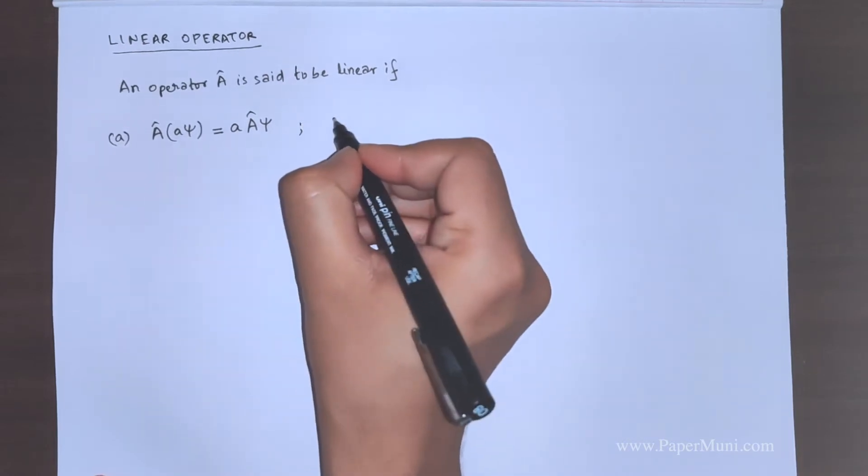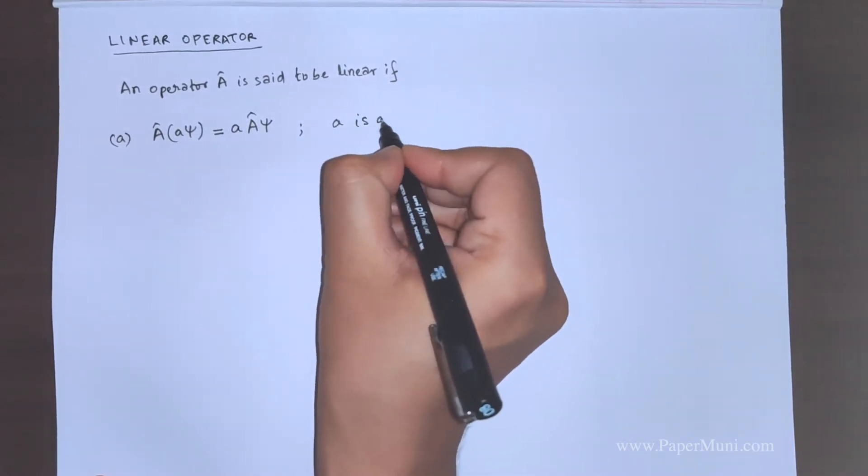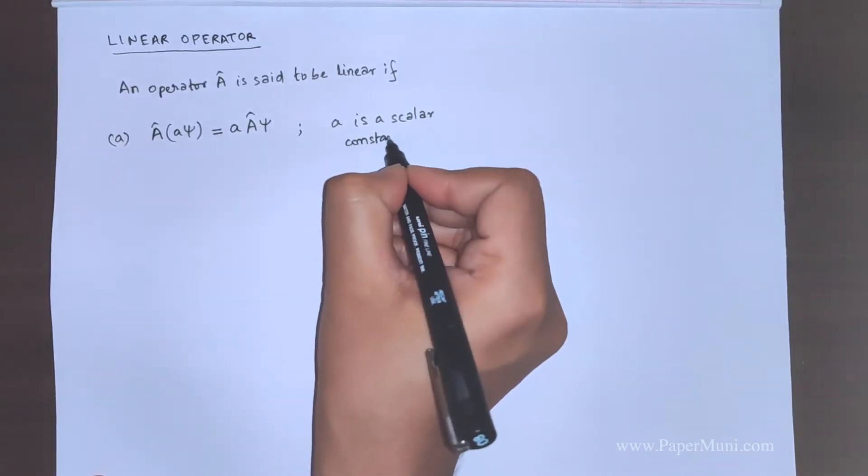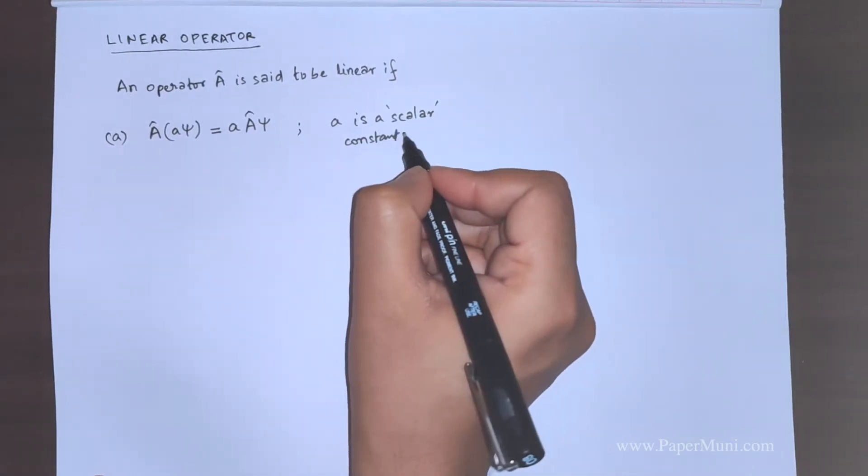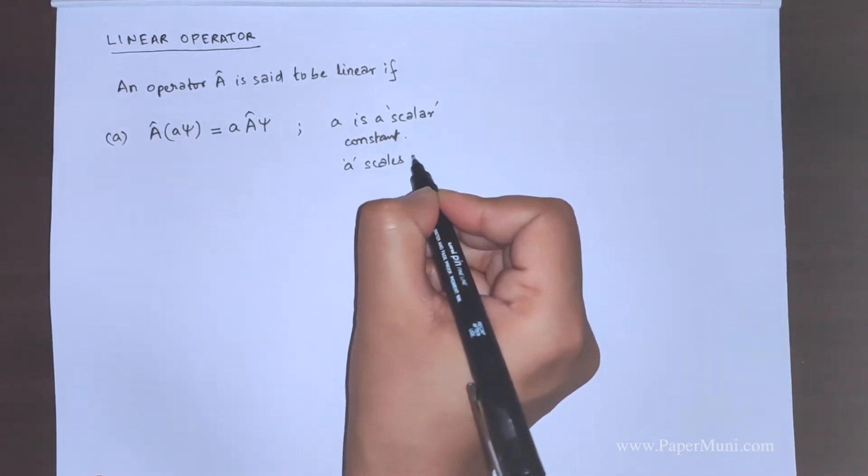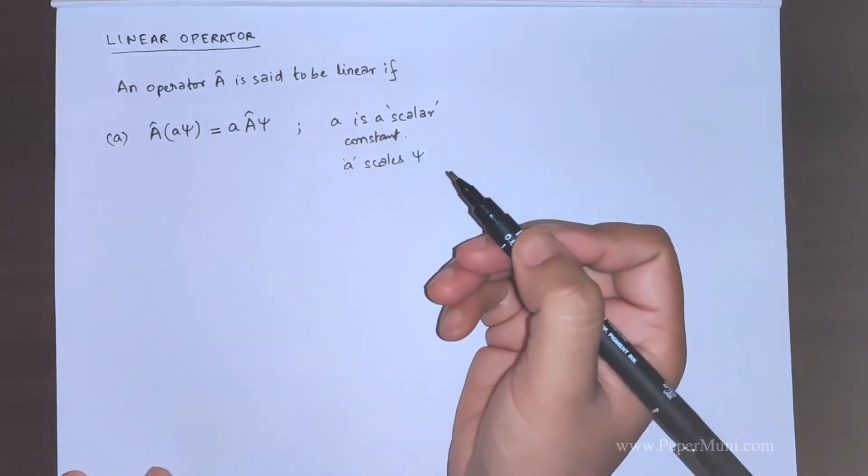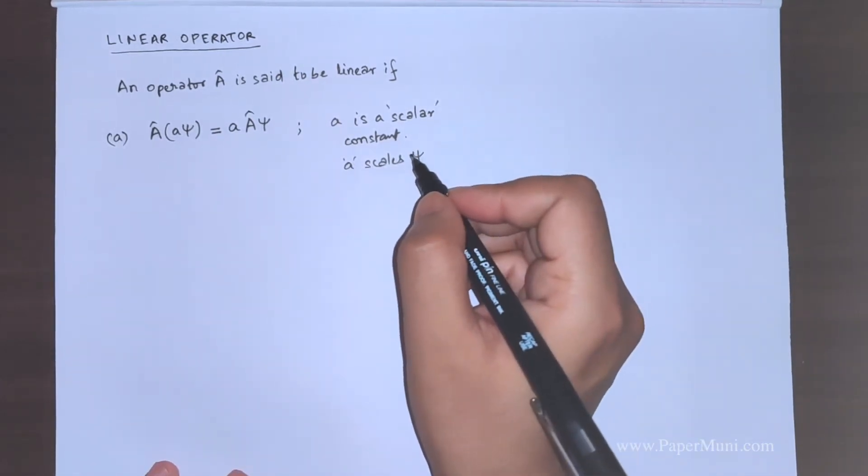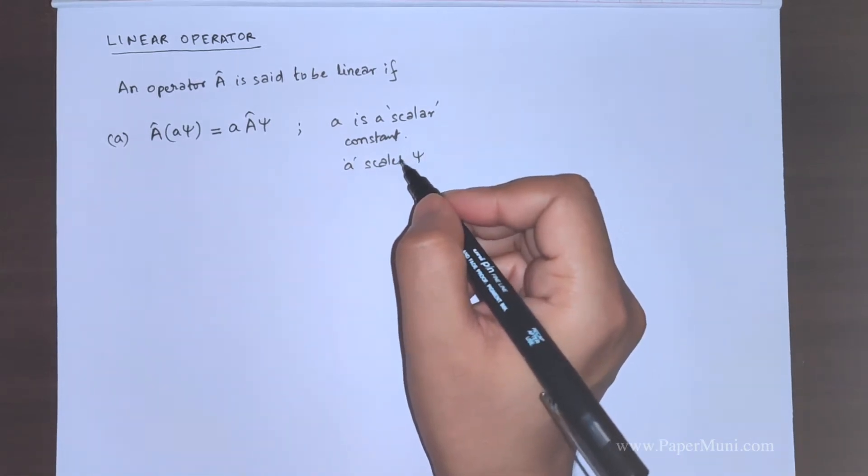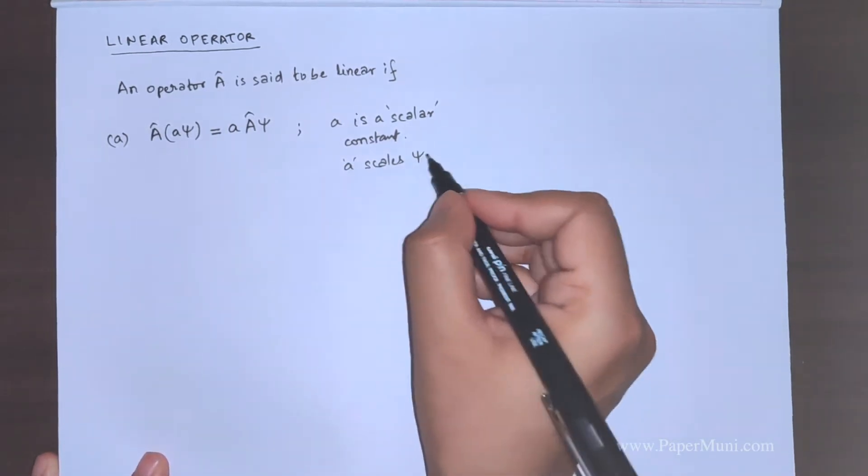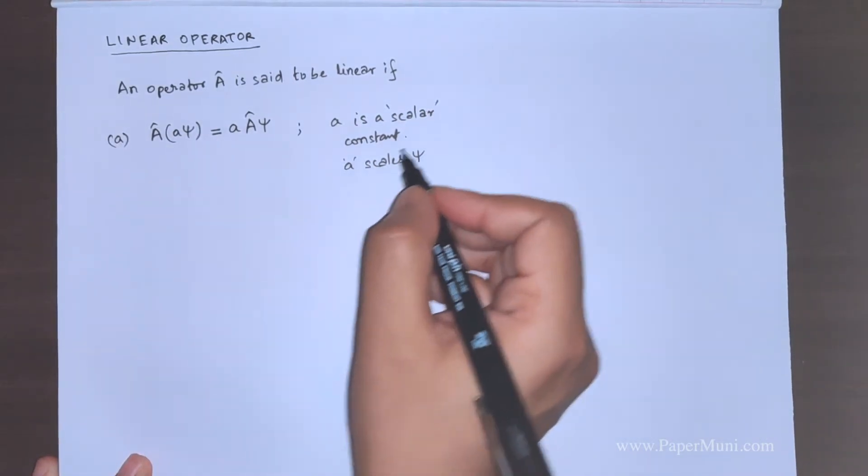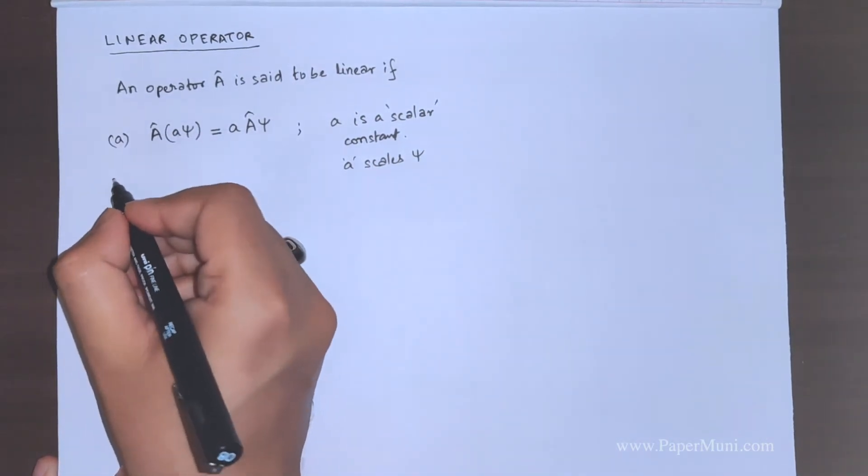A is a scalar constant. What does it mean, a scalar? We have learnt about a constant. What is a scalar constant? Because it actually scales, A scales psi. Like in vectors we have, say we multiply by a real constant, it increases the magnitude of the vector. It is not exactly the same thing. You can think of it that it scales psi A times. That is why it is called a scalar constant.